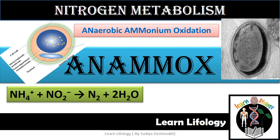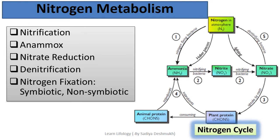Welcome to Learn Lifeology. In this video we are going to talk about a very special phenomenon which occurs in nitrogen metabolism — that is anammox. To understand anammox we should be clear about the nitrogen cycle. The nitrogen cycle involves five important steps: nitrification, anammox, nitrate reduction, denitrification, and nitrogen fixation.